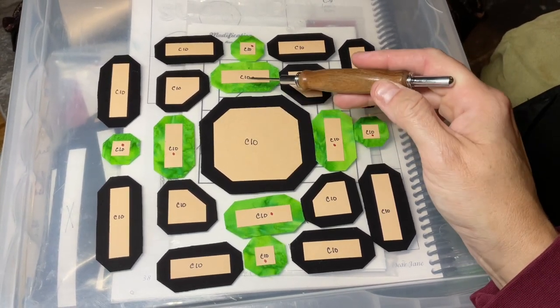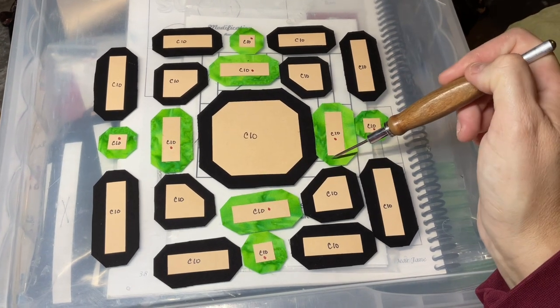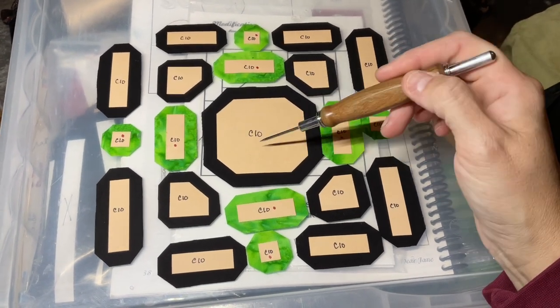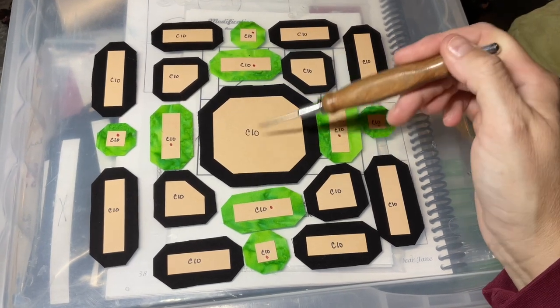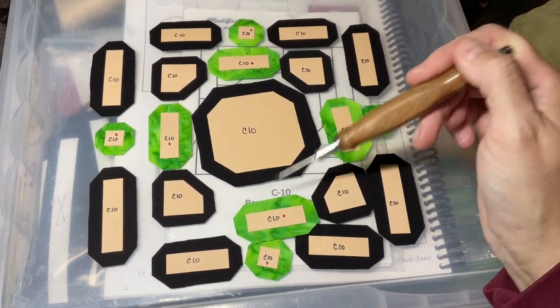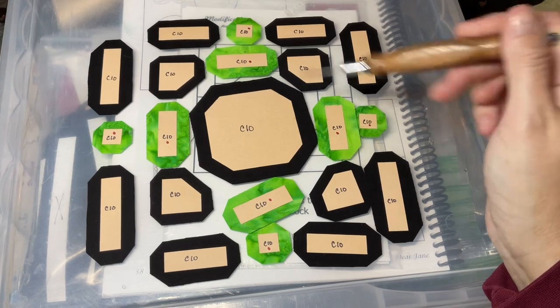So I'm going to baste these, and I'm going to baste these rectangles, and then I'm going to attach the rectangles to the octagon. Then I'll come back and baste these and attach them. So the first thing to do is to baste the octagon and then these four rectangles on each side.